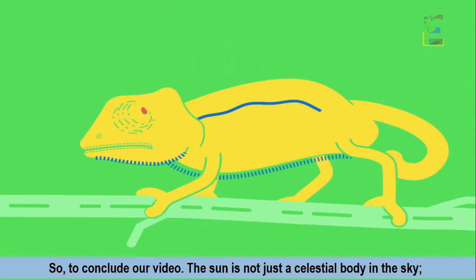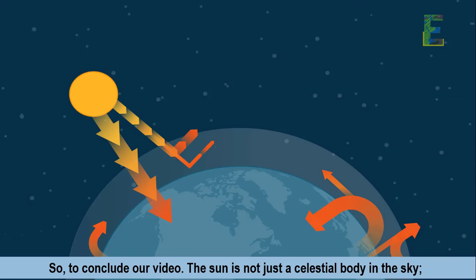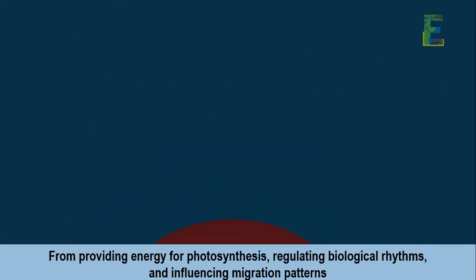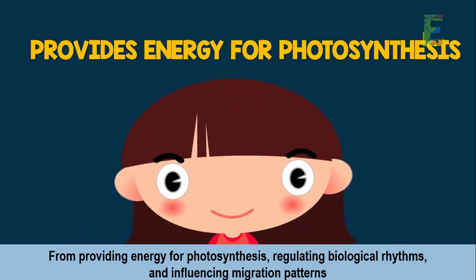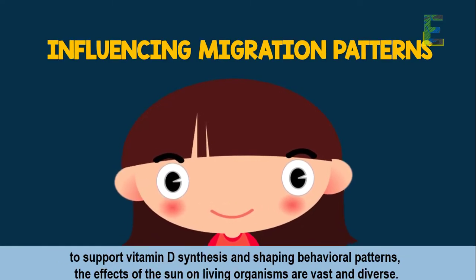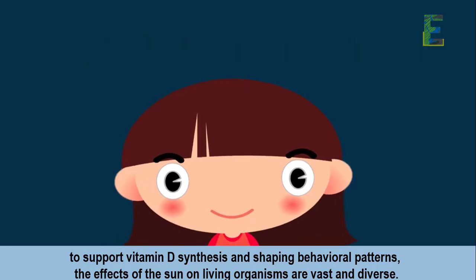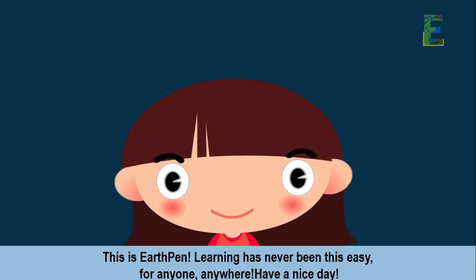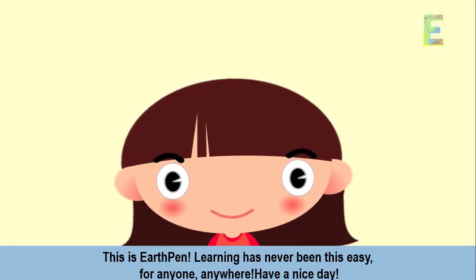To conclude, the sun is not just a celestial body in the sky — it is a life-giving force that profoundly impacts all living things. From providing energy for photosynthesis, regulating biological rhythms, and influencing migration patterns, to supporting vitamin D synthesis and shaping behavioral patterns, the effects of the sun on living organisms are vast and diverse. As we marvel at the beauty and importance of the sun, let us recognize its indispensable role in sustaining life on our remarkable planet. This is EarthPen — learning has never been this easy for anyone, anywhere. Have a nice day.